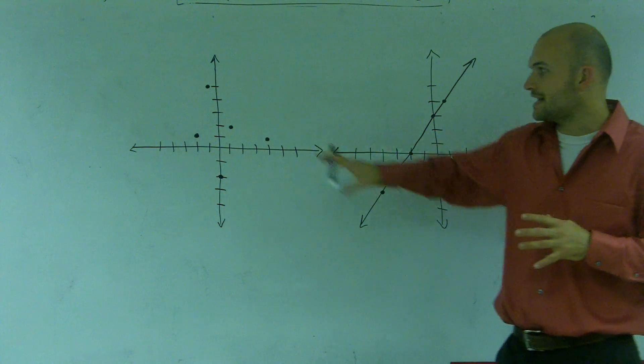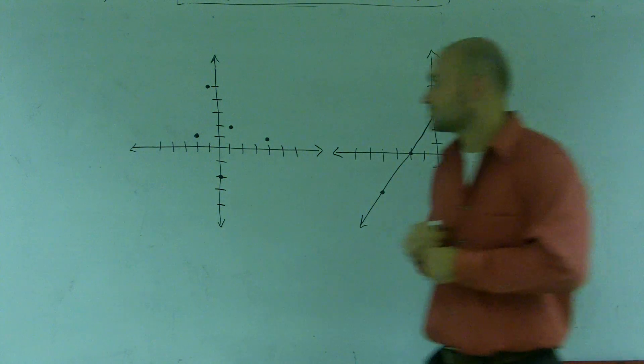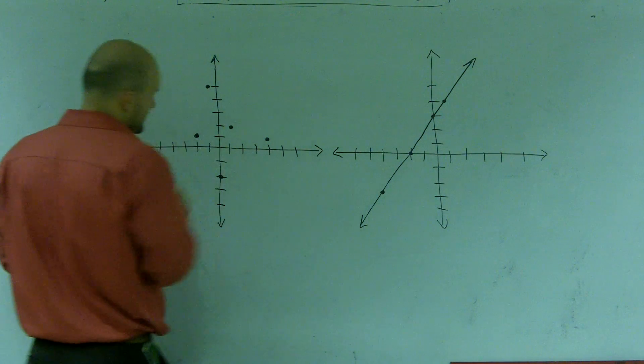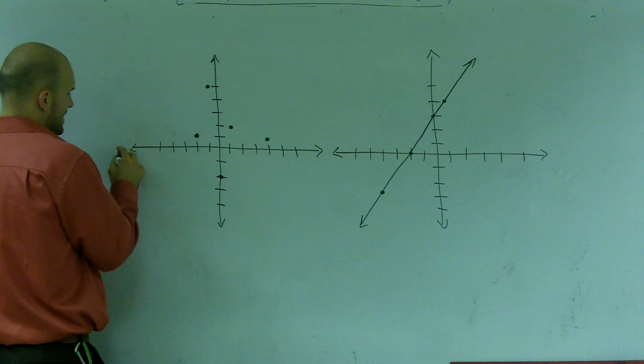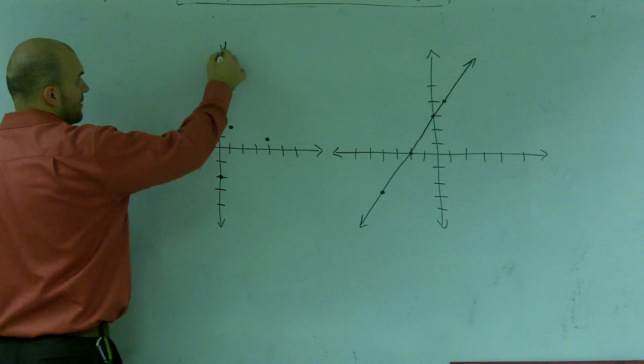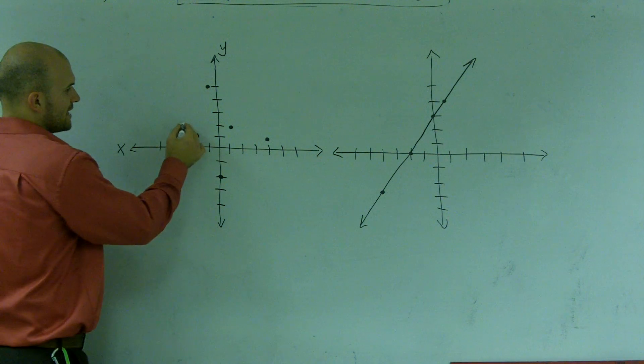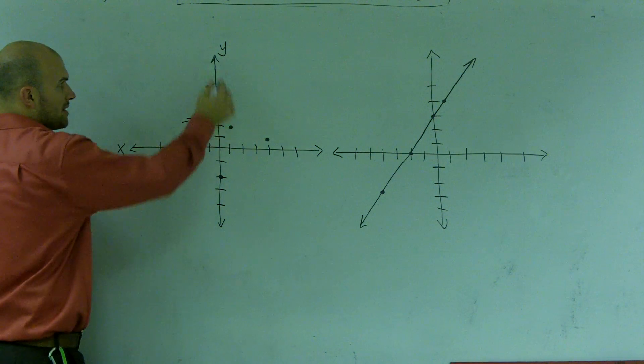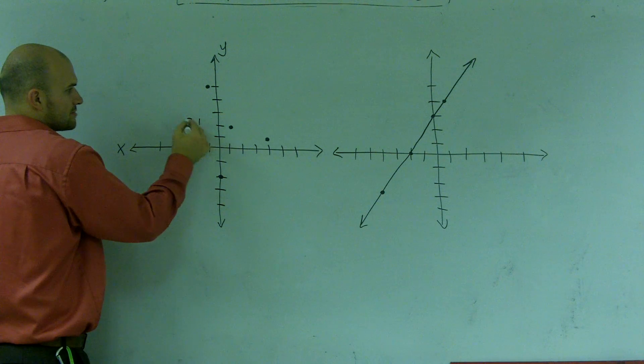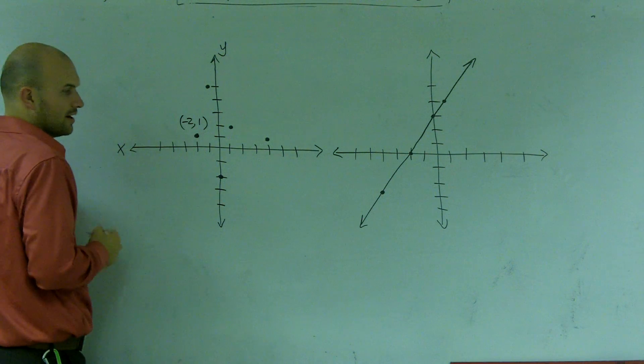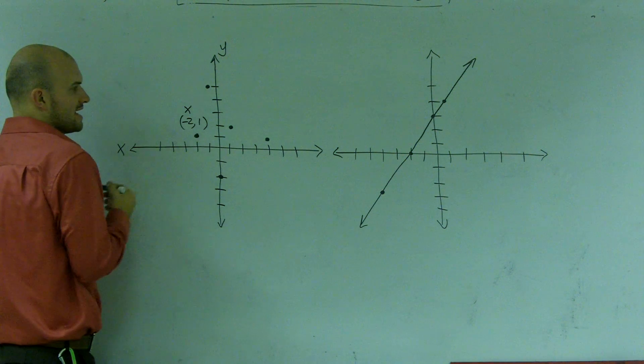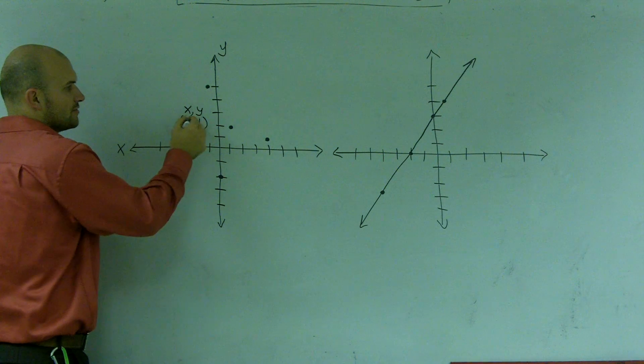Well, a couple things I've talked about is you can write every point as an ordered pair. So what I'm going to do is I'm going to write each one of these as an ordered pair. Remember, this is my x axis and this is my y axis. The x axis tells me how far I'm going left to right. So over here, I went over negative two. And then on my y axis, I went up one. So my ordered pair is negative two, one, where negative two represents the x value and one represents the y value.